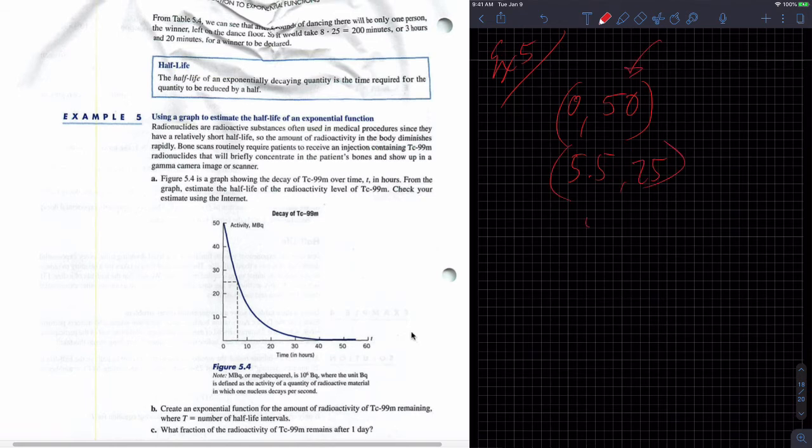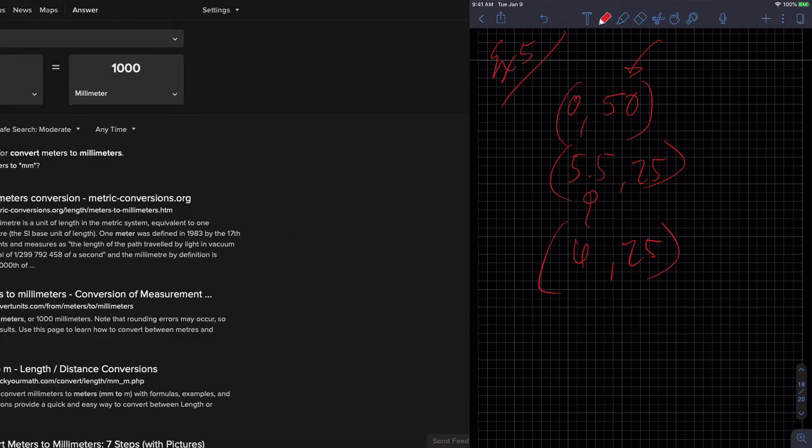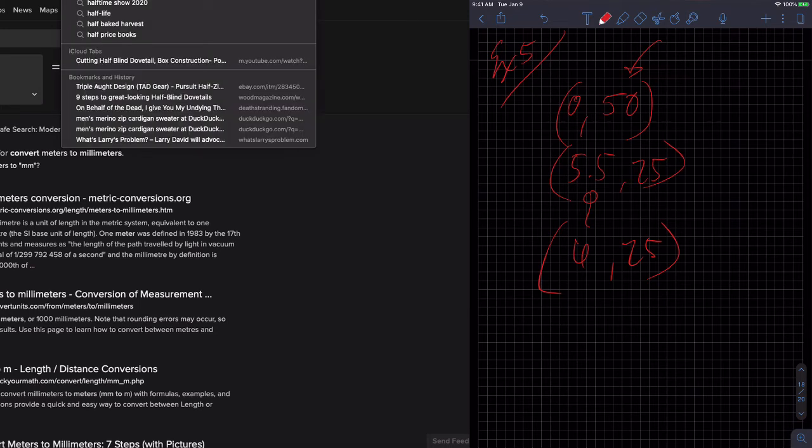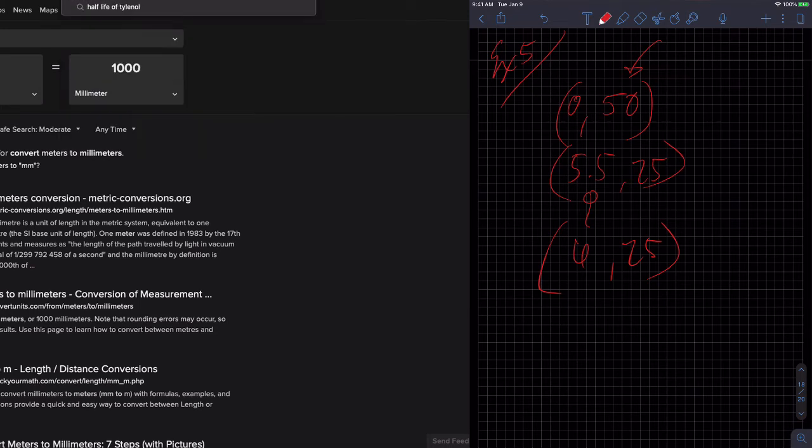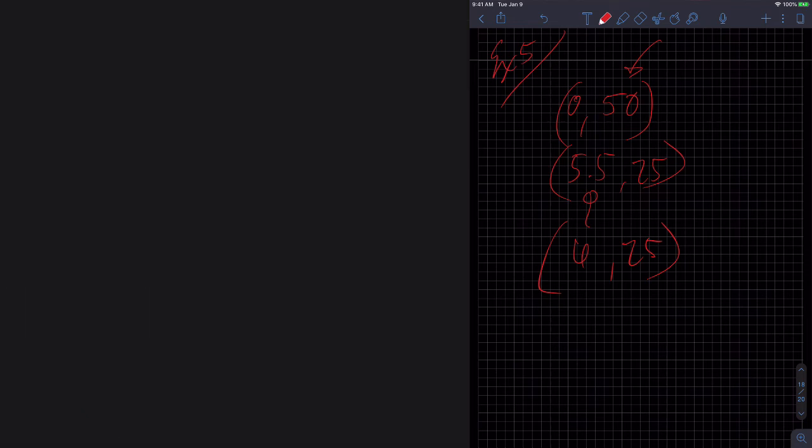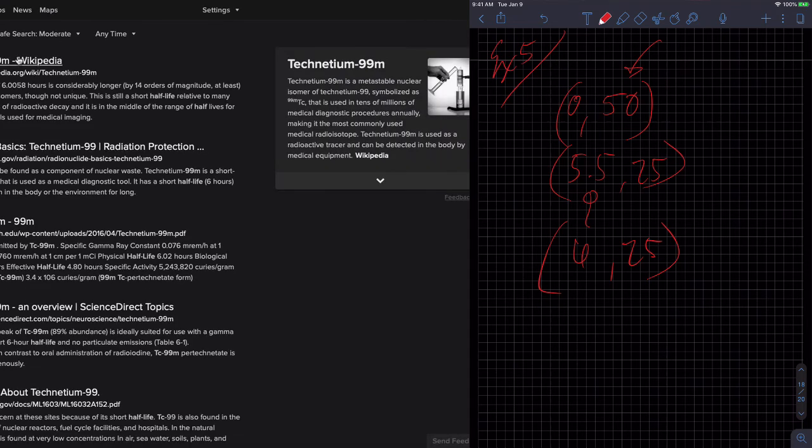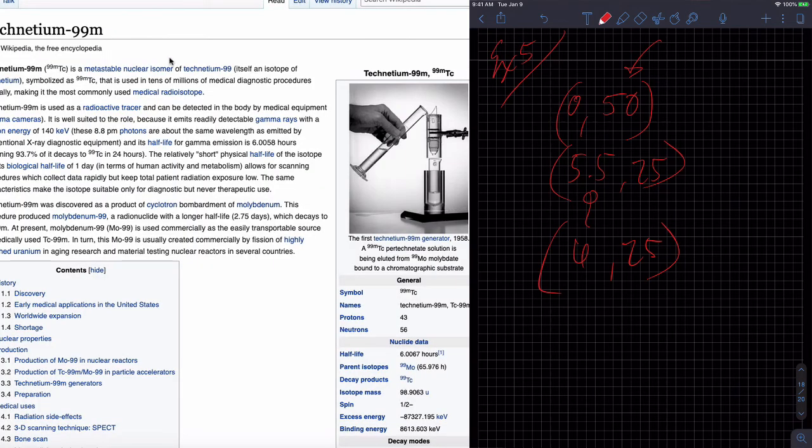So 5.5, maybe it's 6. I don't know. Let's go see, as they suggested, let's go see the internet and see what they have to tell us. So half-life of TC99M, right? And so we'll go see what that is.